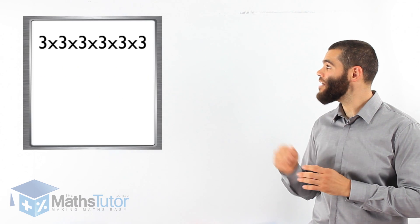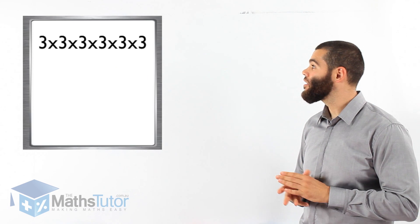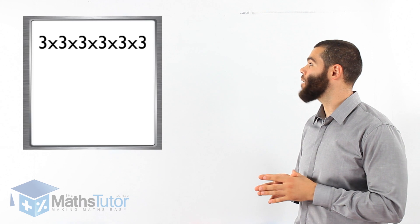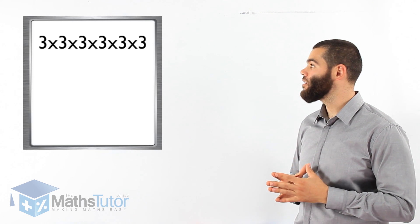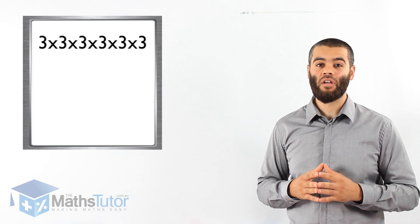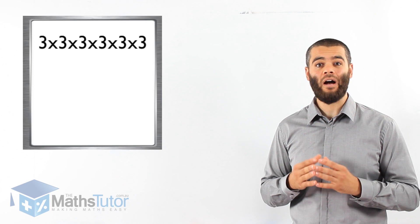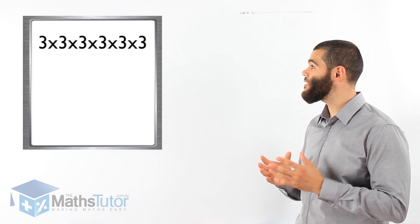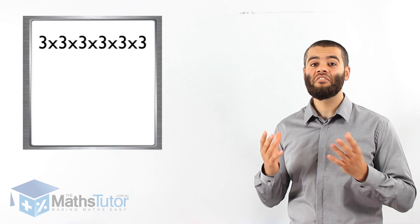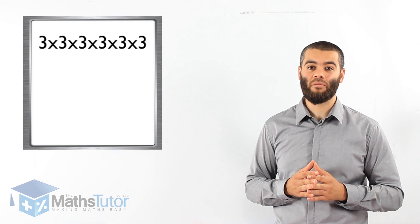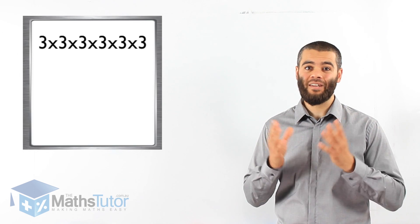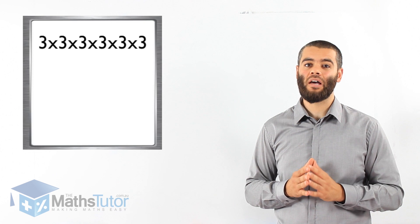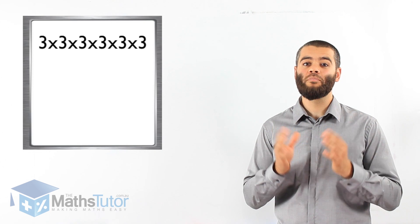We have a number sentence that says 3 times 3, times 3, times 3, times 3, times 3. Wow, that's pretty long. So we have 3 times itself, 6 times. In indices, we want to make things smaller and simpler. We want to simplify it.